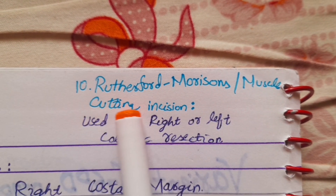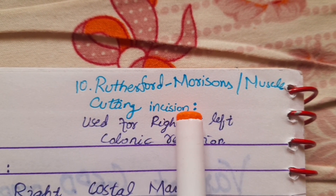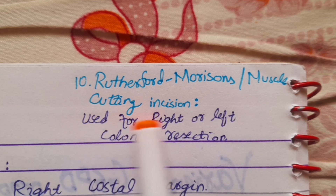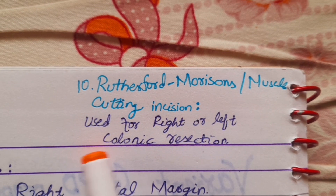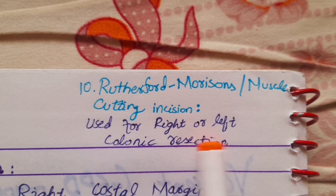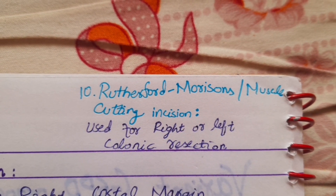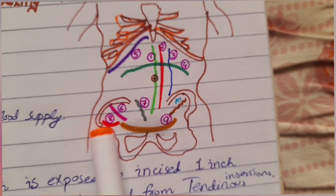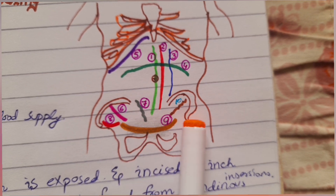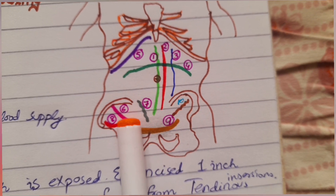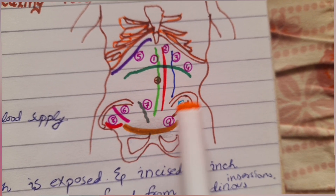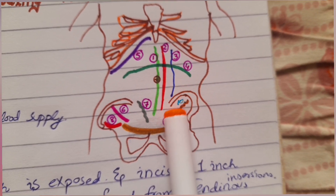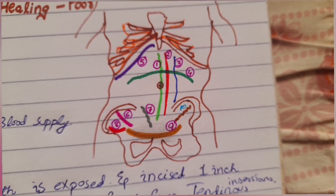Sometimes a tenth type of incision is used — the Rutherford Morrison muscle-cutting incision. It is used for right or left colonic resection. In the diagram, number nine shows the suprapubic or Pfannenstiel incision and number ten shows the Rutherford Morrison muscle-cutting incision.